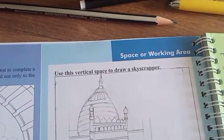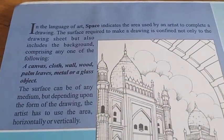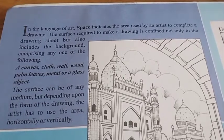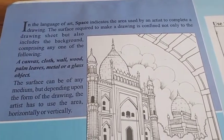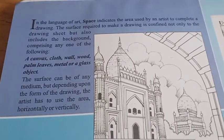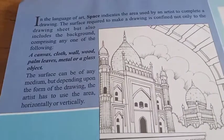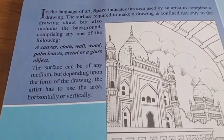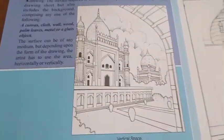Let's turn your page and look at the second space or working area. Here is some information: in the language of art, space indicates the area used by an artist to complete a drawing. The surface required is not confined only to the drawing sheet but also includes the background — a canvas, cloth, wall, wood, palm leaves, metal, or glass. The artist has to use the area horizontally and vertically.